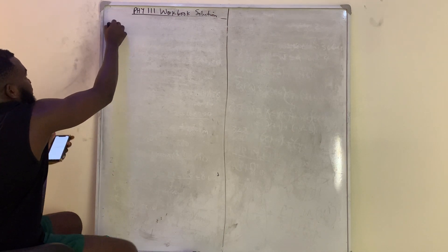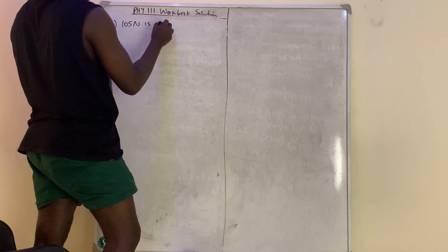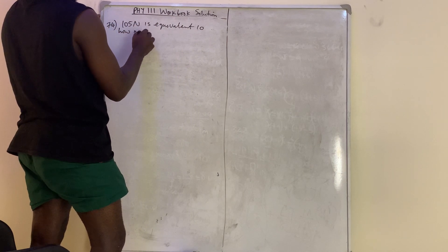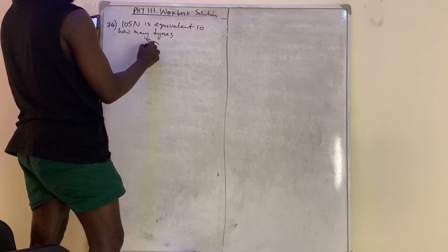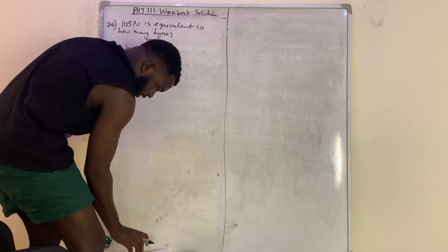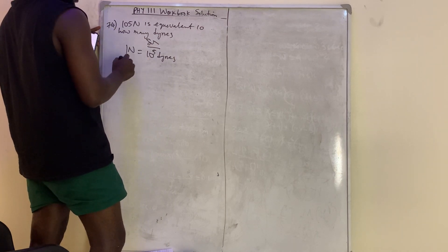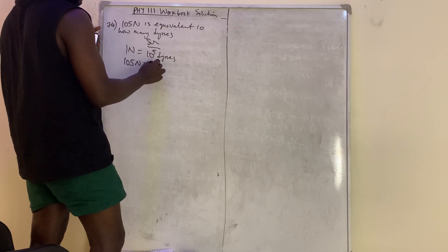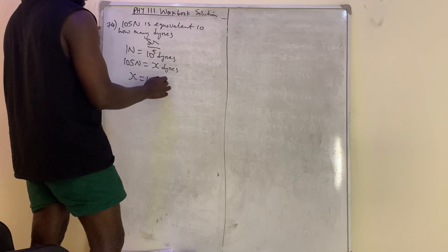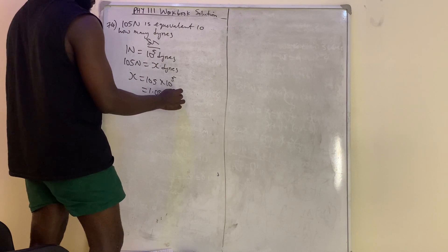Question 74 asks: 105 Newtons is equivalent to how many dynes? Recall that 1 Newton equals 10 to the power of 5 dynes. So 105 Newtons cross-multiplied gives x = 105 times 10 to the power of 5, which equals 1.05 times 10 to the power of 7 dynes.